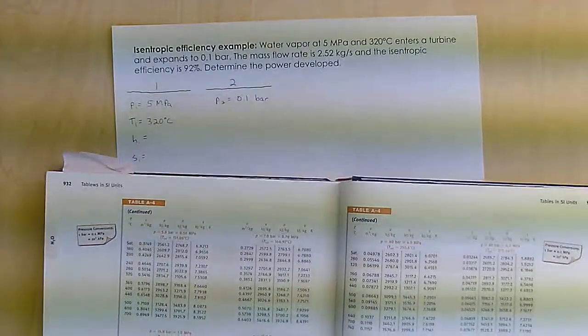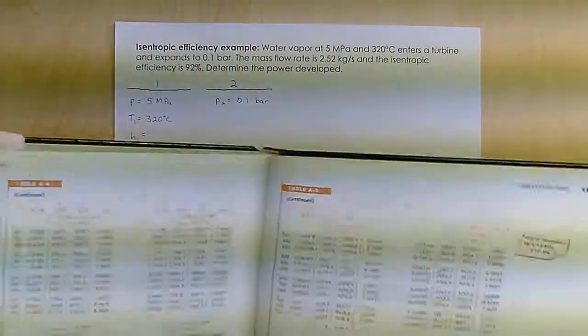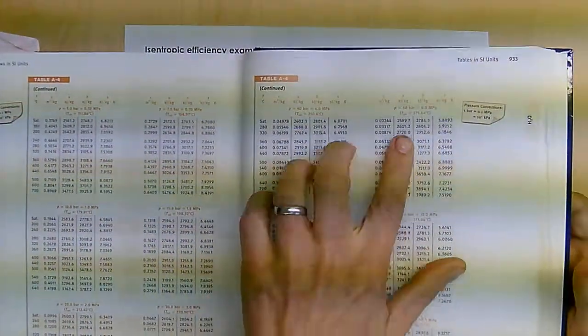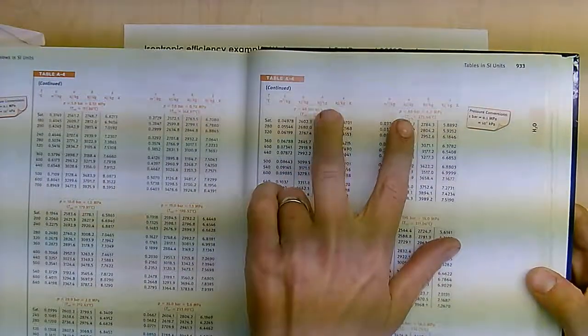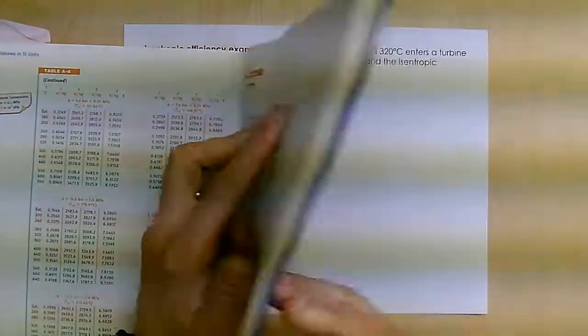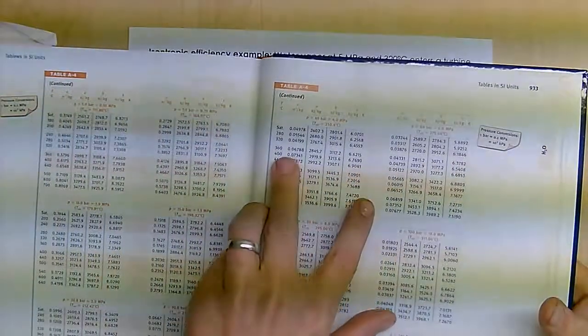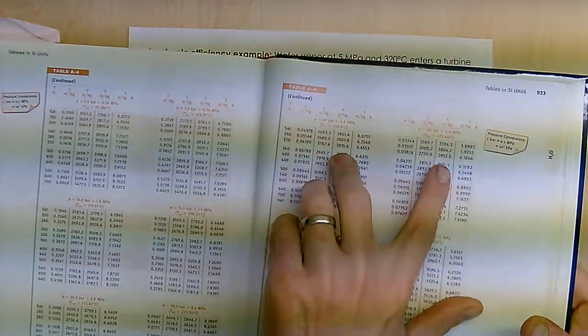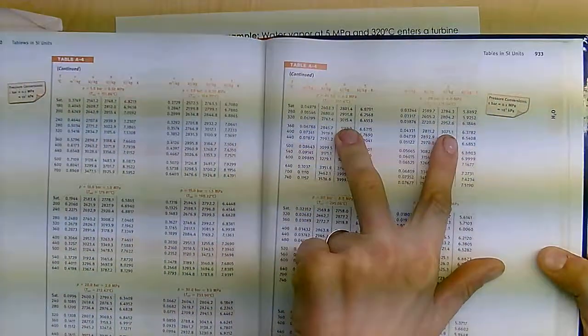I'm going to go to 5 megapascals, which is halfway between these two tables. Here's 4, and here's 6. So at 320, H is halfway between these two values here.